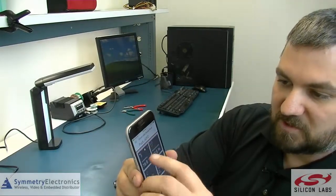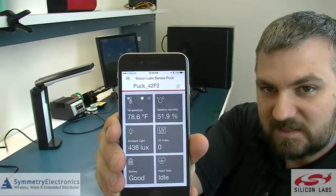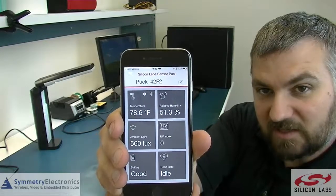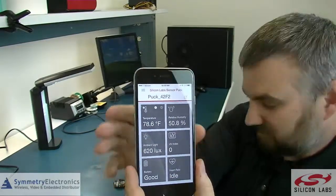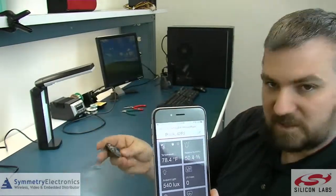I'm going to switch the temperature over to Fahrenheit. It shows you in Celsius. So now you can see it's 78.8 degrees Fahrenheit in here according to our sensor puck module.